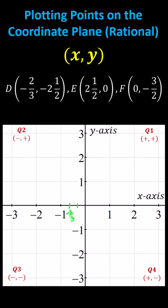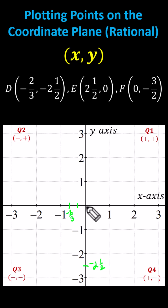Now let's locate negative two and a half on the y-axis, which is right in the middle between negative two and negative three. And now to plot point D — from the origin, because x is negative two-thirds, we move left two-thirds units, and then because y is negative two and a half, we go down two and a half units.